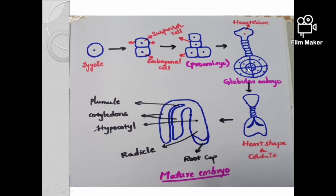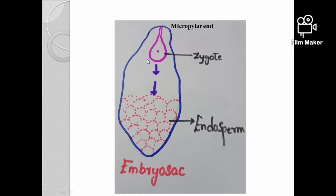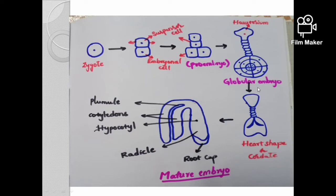Looking at the zygote in the embryo cycle: the zygote has repeated mitotic regions. The endosperm helps nourish the developing embryo. Eventually the heart shape is formed, and then the mature embryo is formed.